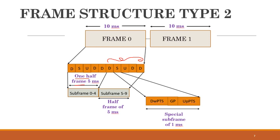The special subframe has 3 different fields: DWPTS, which is the downlink part of the special subframe used for downlink transmission; UPPTS, which is the uplink part of the special subframe used for uplink sounding reference signals; and a GP field, which provides the guard period for the downlink-to-uplink and uplink-to-downlink switch.